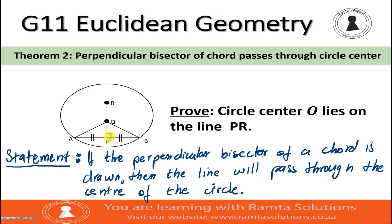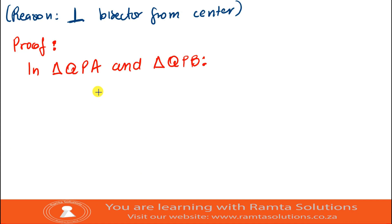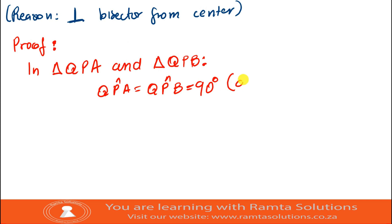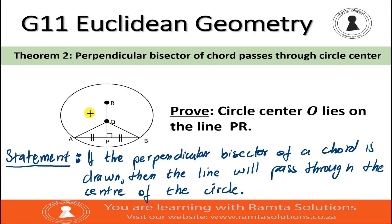We have 90 degrees here — that is common. Angle QPA is equal to angle QPB, which is 90 degrees. The reason is that it is given — this is information that's readily available on the statement or on the diagram.